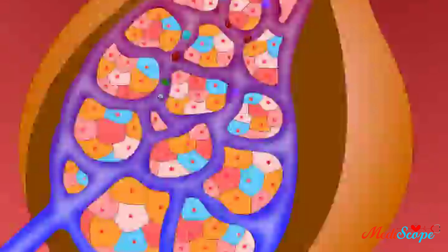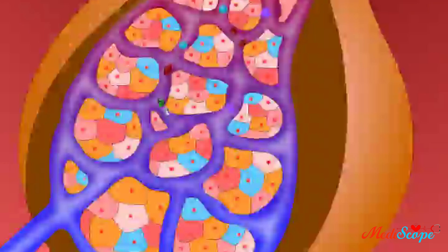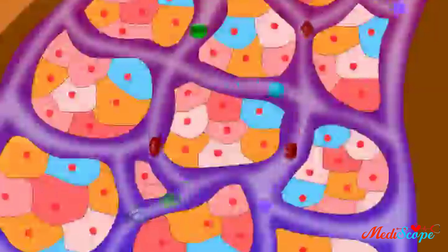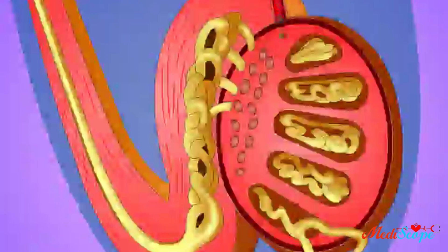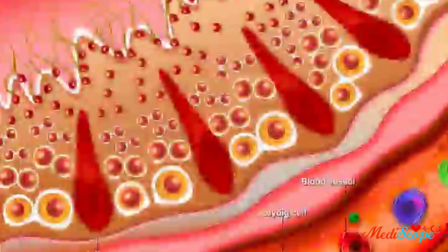There, GnRH stimulates the gonadotrophs of the anterior pituitary, which then produce a pulsatile release of luteinizing hormone, or LH, and follicle stimulating hormone, or FSH. LH and FSH travel from the brain to the testes through the blood vessels. Let's look more closely at the cross-section of the testes and further to a section of a seminiferous tubule.